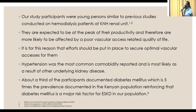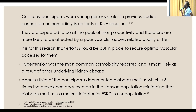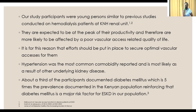Our study participants were young people, similar to previous studies carried out on hemodialysis patients at Kenyatta National renal unit. They are expected to be at the peak of their productivity and are therefore likely to be affected by poor vascular access-related quality of life — making optimal vascular access critically important. Hypertension was the most common comorbidity, and about a third of participants documented diabetes, which is five times the prevalence in the Kenyan population, reinforcing that diabetes mellitus is a major risk factor for end-stage kidney disease in our population.